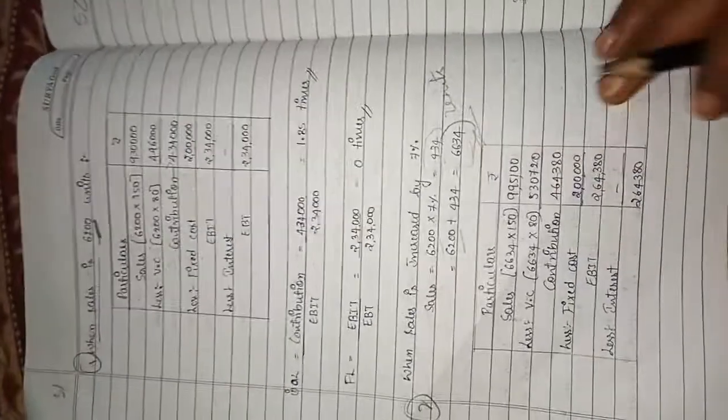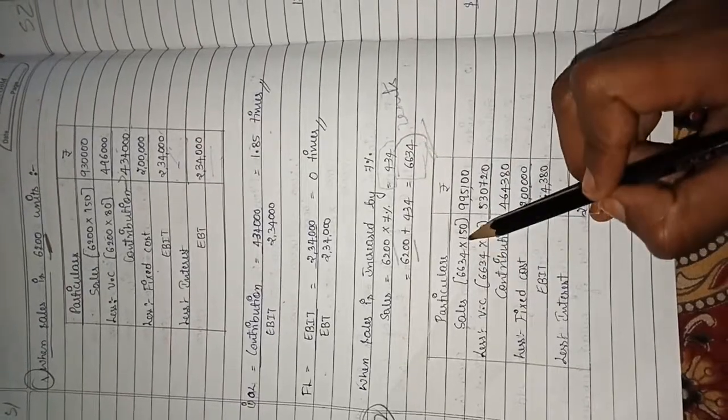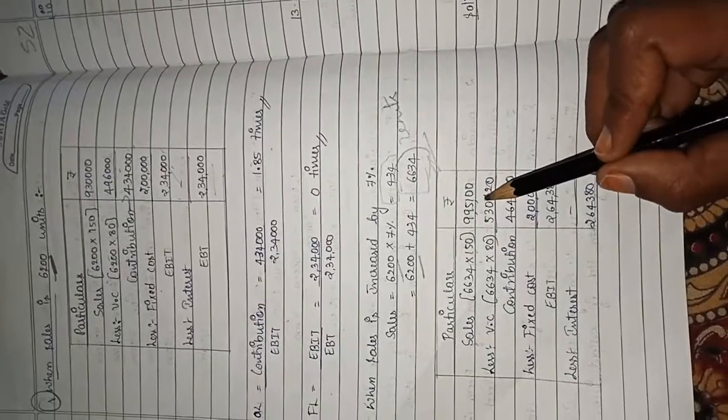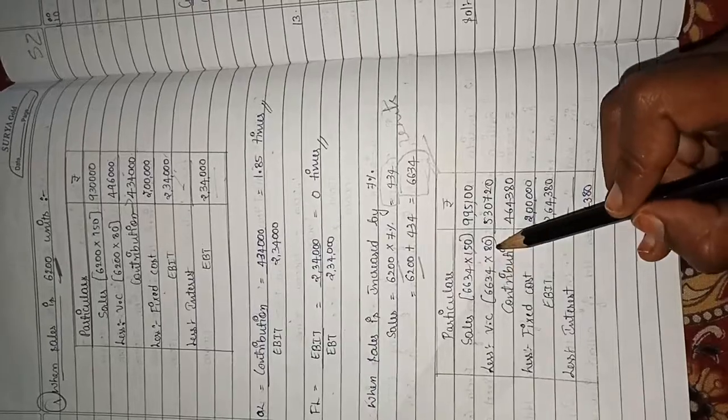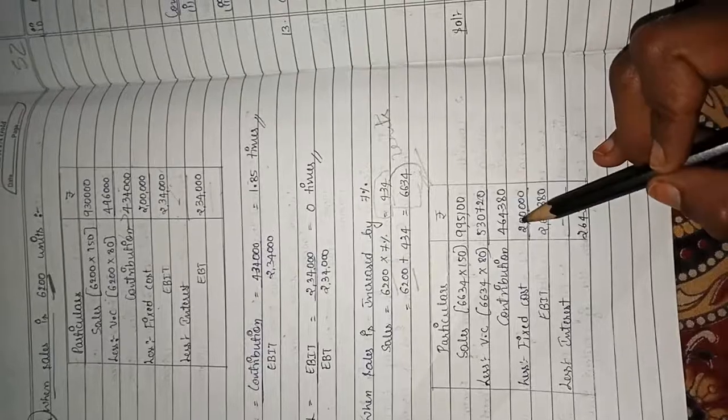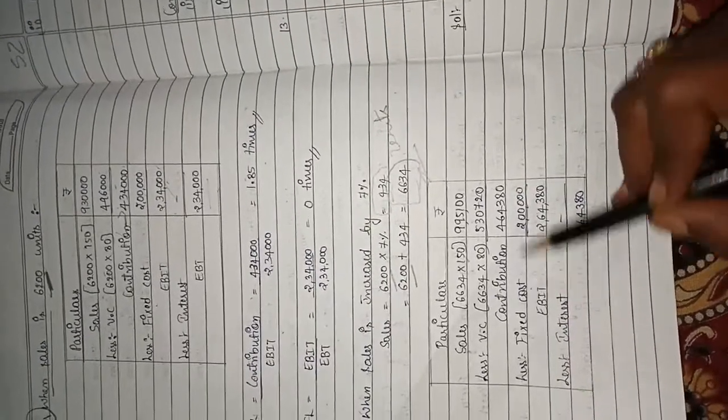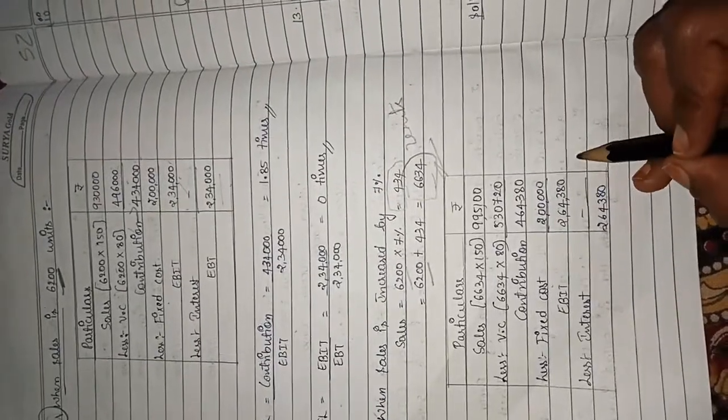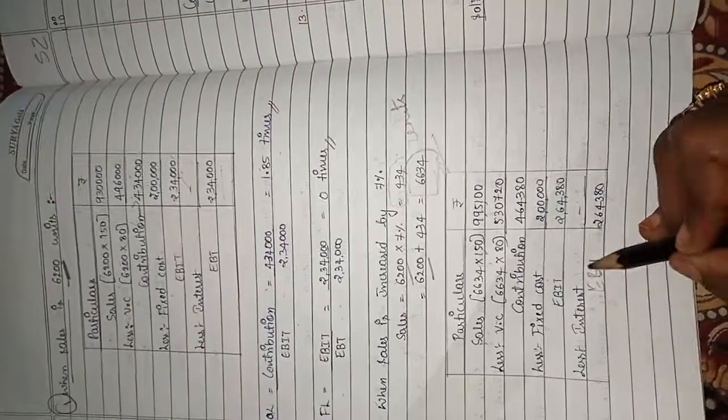Sales: 6,634 into 150 per unit equals 9,95,100. Less variable cost: 6,634 into 80 per unit equals 5,30,720. Contribution is 4,64,380. Deduct fixed cost of 2 lakhs, we get EBIT of 2,64,380. No interest is given, so finally we get EBT 2,64,380.